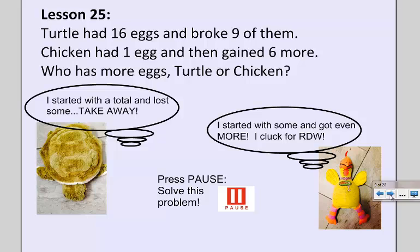Chicken said, I started with some and got even more. I cluck for RDW, so chicken wants you to read the problem, draw a picture, and write two number sentences, one for chicken, one for turtle. Please press pause and try this problem.